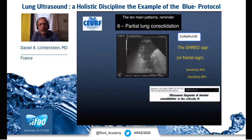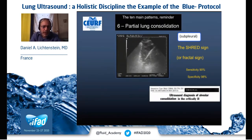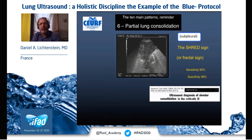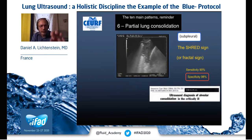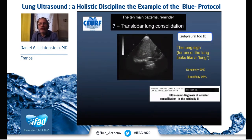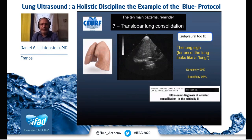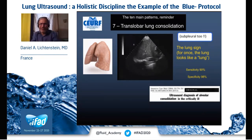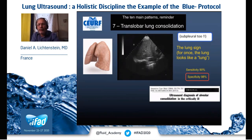Lung consolidation can be partial, like a subpleural consolidation, where we have the shred sign or fractal sign — which clearly indicates lung consolidation. That is the shredded area between the consolidated lung and the air beneath. Here we see a translobar lung consolidation where the whole lung is consolidated; we call this the lung sign, which is completely specific to translobar lung consolidation.